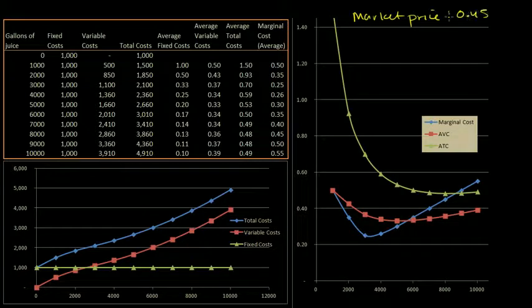Just going with the logic we introduced in the last video, you want to produce as much as possible to spread out the fixed cost, but you don't want to produce so much that the marginal cost is higher than your marginal revenue. And your marginal revenue is your market price.